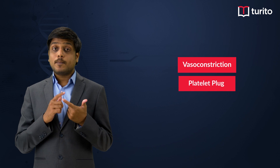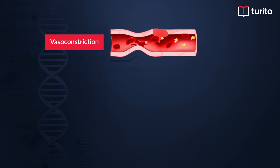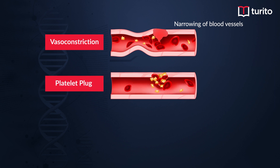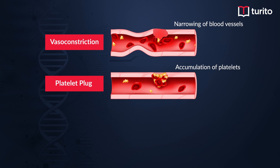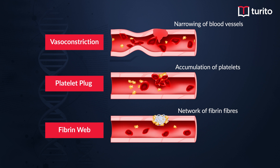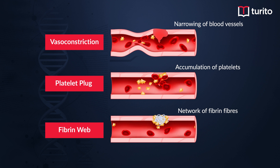In humans, blood coagulation can be explained in three simple steps: vasoconstriction, platelet plug formation, and the formation of a fibrin web. Vasoconstriction refers to the contraction of smooth muscles of the blood vessels to narrow the lumen and reduce blood flow. Platelet plug formation refers to the accumulation of platelets near the site of injury. Formation of the fibrin web refers to fibrin fibers forming a mesh-like network near the platelet plug to completely obstruct bleeding.